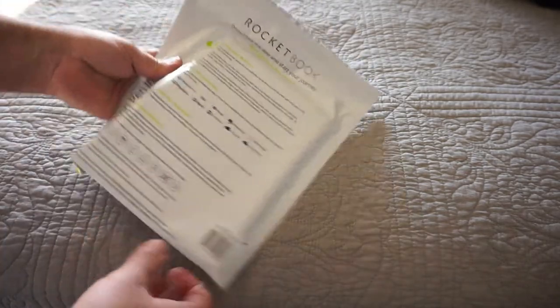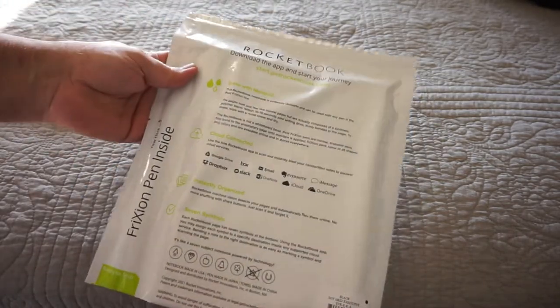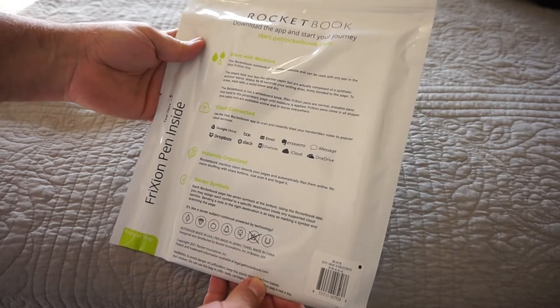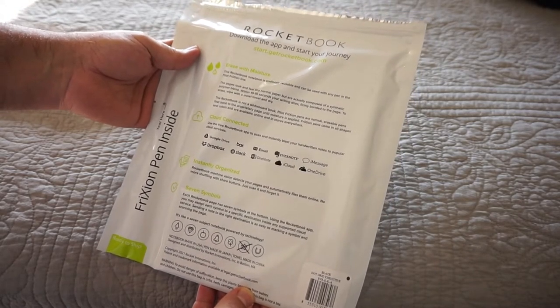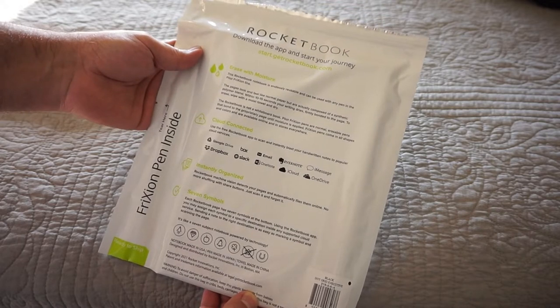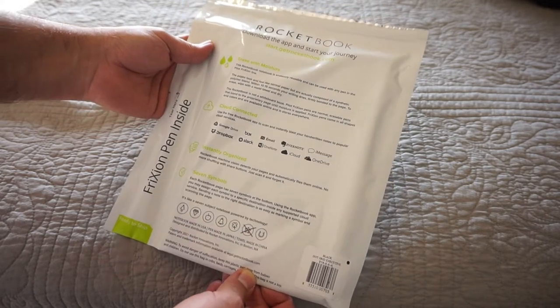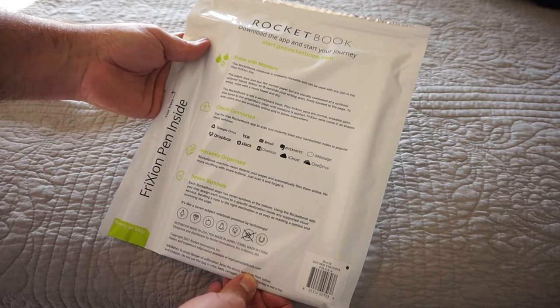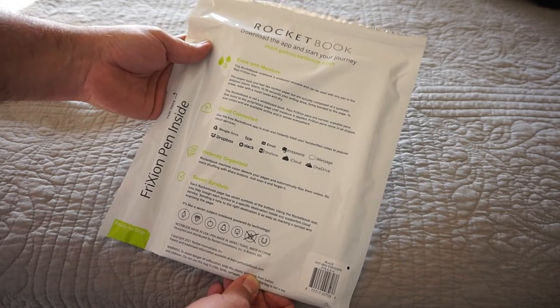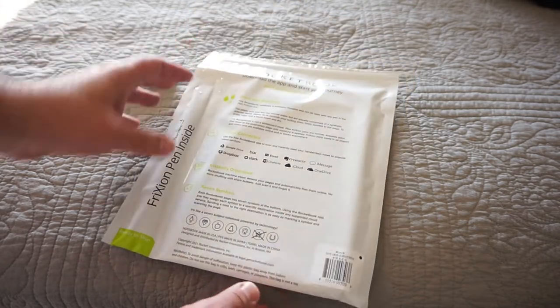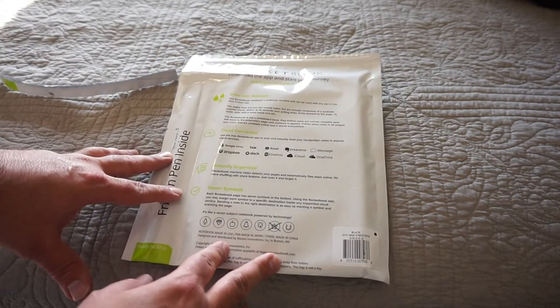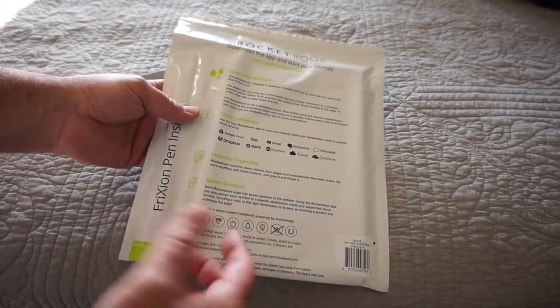Now let's see some of the features that it has. It says erase with moisture. This Rocketbook notebook's endlessly reusable and can be used with any pen in the Pilot friction line. It says the pages look and feel like normal paper, but actually composed of a synthetic polymer blend. And within 10 to 15 seconds, your writing dries firmly bonded to the page. To erase, wipe with a moist towel and dry.